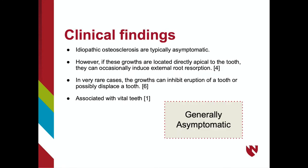The clinical findings associated with idiopathic osteosclerosis could be considered insignificant because these lesions are typically asymptomatic and the teeth associated are vital. However, if the lesion is located immediately apical to a tooth, it has the chance of inducing external root resorption. Additionally, the growths could impede tooth eruption or possibly contribute to tooth displacement within the patient's arch. These situations are very rare, and most idiopathic osteosclerosis encountered over the course of a clinician's career will be asymptomatic lesions.